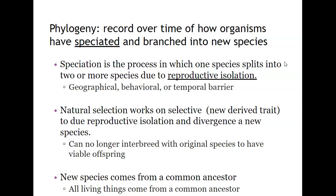Phylogeny is the record over time of how organisms have speciated. There's some common ancestor, and eventually the two populations became different enough to not be the same species anymore. That is due to reproductive isolation, meaning they can no longer reproduce with one another. This can happen via geography, behavior, or time. Natural selection works on new traits due to reproductive isolation.